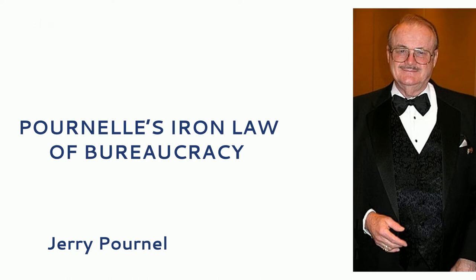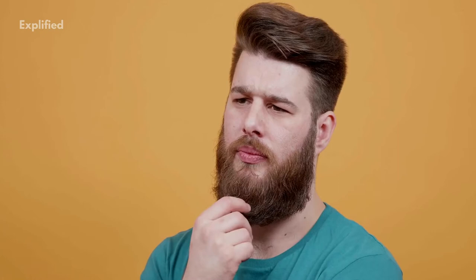Jerry Burnell gave the Iron Law of Bureaucracy, which states that in any bureaucratic organization there will be two kinds of people: those who work to further the actual goals of the organization, and those who work for the organization itself.